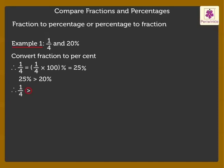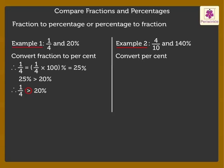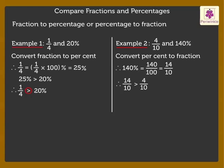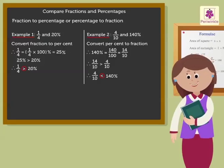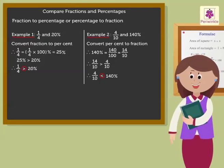Thus, 1 upon 4 is greater than 20%. Finally, let's compare 4 upon 10 and 140%. Here, let's convert the percent into a fraction. 140% is equal to 140 upon 100 is equal to 14 upon 10, which is greater than 4 upon 10. Thus, 4 upon 10 is less than 140%. Kids, comparing fractions, decimals and percentages was easy. Why don't you try some now?